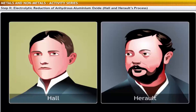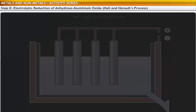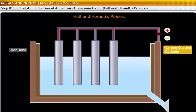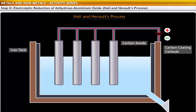The electrolytic cell used in this process has the following components: an iron tank lined on the inside with carbon, which acts as the cathode; and a series of carbon rods that act as the anode.